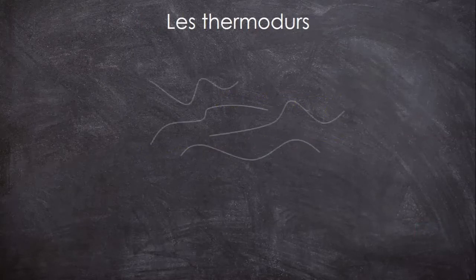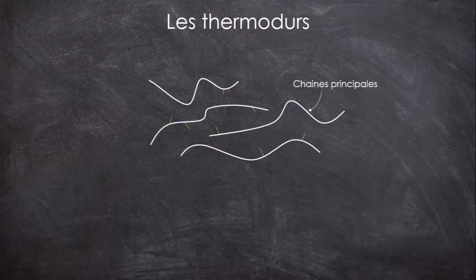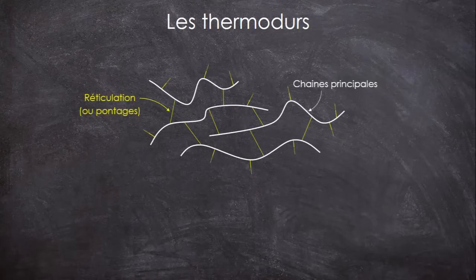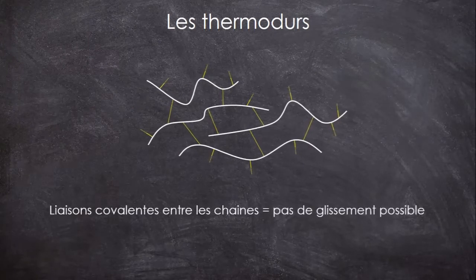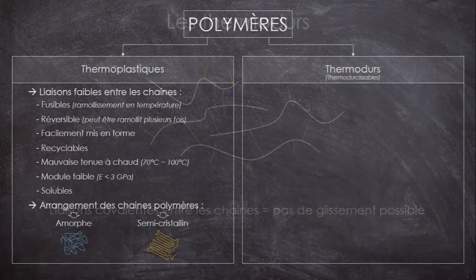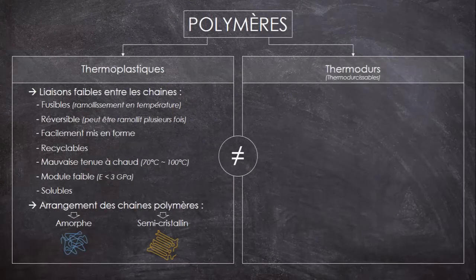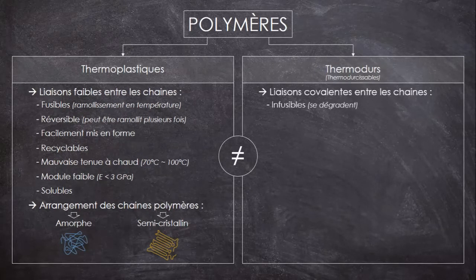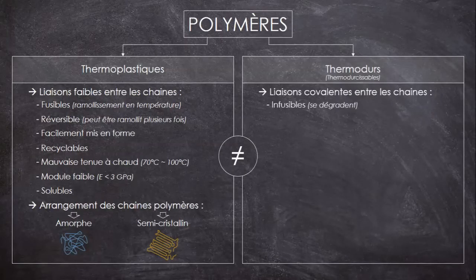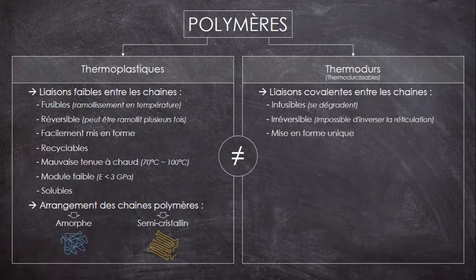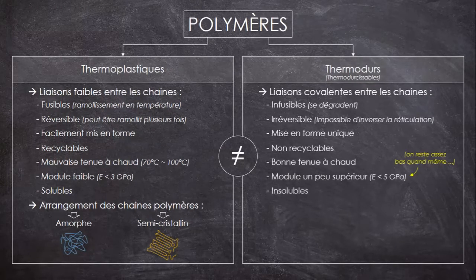Et maintenant, l'autre catégorie. Dans un thermodur, les chaînes polymères sont liées entre elles par d'autres chaînes plus courtes, qu'on appelle des réticulations ou des pontages, et donc par des liaisons fortes, ce qui empêche les chaînes de glisser les unes par rapport aux autres. En conséquence, contrairement au thermoplastique, les thermodurs sont infusibles, puisque malgré la chaleur les chaînes ne peuvent pas glisser. Si on atteint une température suffisante pour rompre ces liaisons, c'est tout le thermodur qui va cramer. La formation des réticulations est donc un phénomène irréversible ; on ne peut mettre en œuvre un thermodur qu'une seule fois. Ces réticulations rendent aussi les thermodurs impossibles à recycler, mais améliorent leur tenue en température et leurs propriétés mécaniques, en plus de les rendre insolubles.